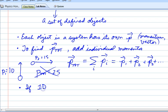If we're talking about one-dimensional momentum, you add the momentum vectors and you just keep track of sign.